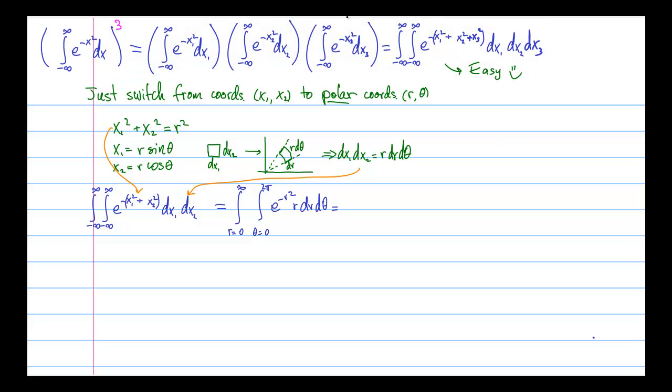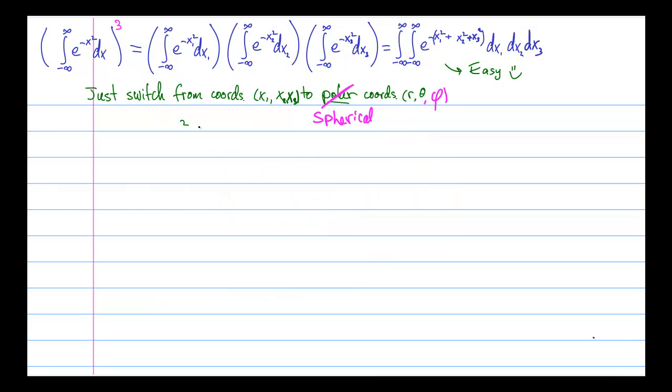And now, instead of going to polar coordinates, we can go to spherical coordinates. And things in spherical coordinates work very similarly to what they did, to how they worked in polar coordinates. Now we have x1 squared plus x2 squared plus x3 squared equals r squared.